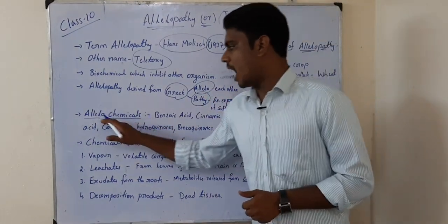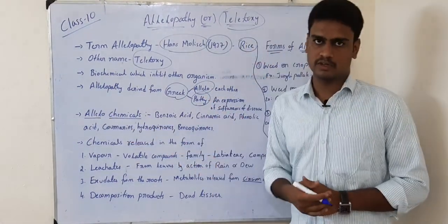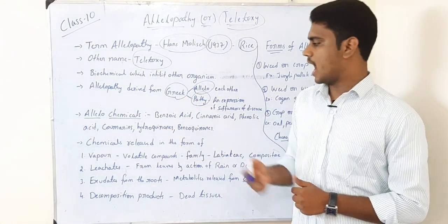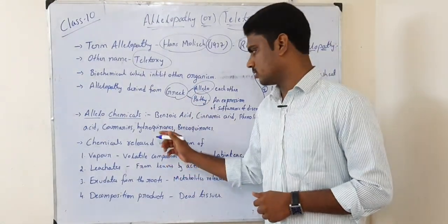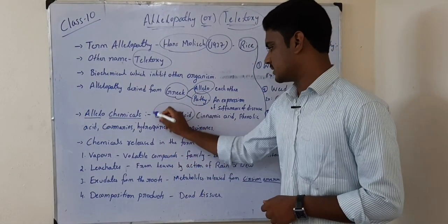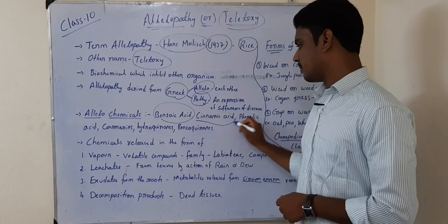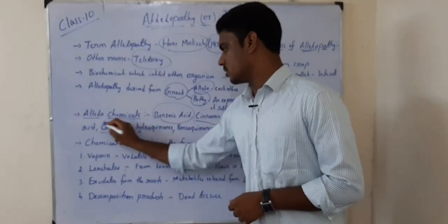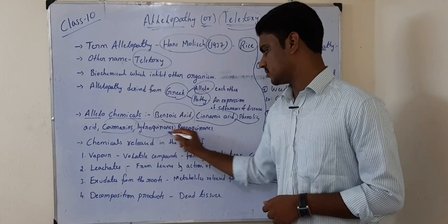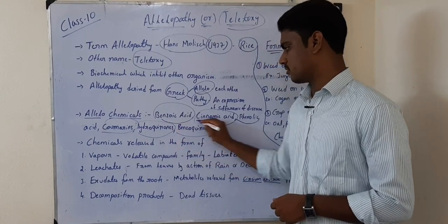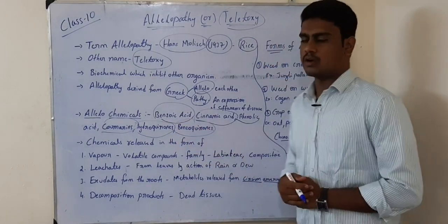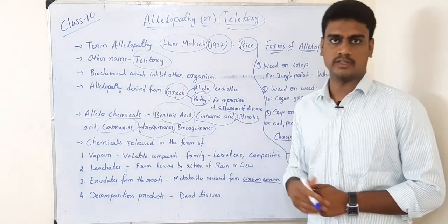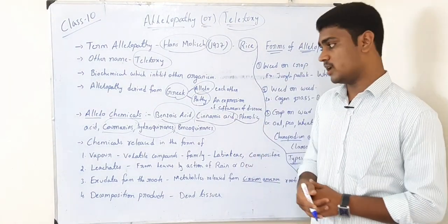Let us see what are the allelochemicals which can be produced by a plant to suppress or inhibit other plants. Those chemicals are benzoic acid, cinnamic acid, phenolic acid, coumarins, hydroquinones, and benzoquinones. These are some allelochemicals produced by the plant to affect other plants.